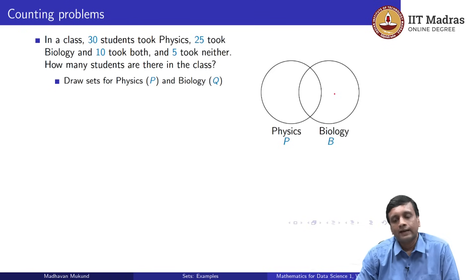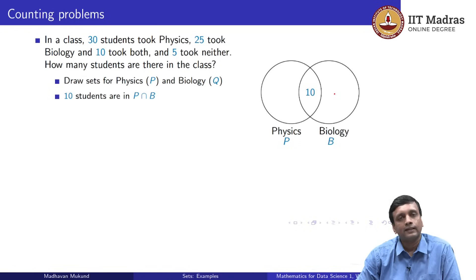Using Venn diagram notation, you can represent the fact that there are two sets of students, those who take physics and those who take biology, by representing them by two sets, say P and Q. And we know that some take both, so there is an intersection, so these two sets overlap. Now, from the data that we are given, we know that the overlap has 10 students. We can write a number 10 in the intersection to indicate that there are 10 students who take physics and take biology.